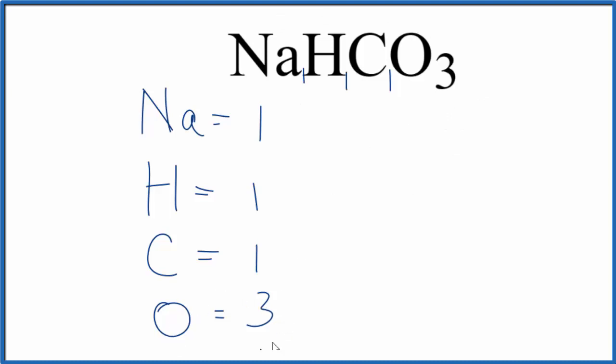To do that, you multiply the number of oxygen atoms by Avogadro's number. So you take 3 times Avogadro's number, and that'll give you the total number of oxygen atoms in 1 mole of NaHCO3.